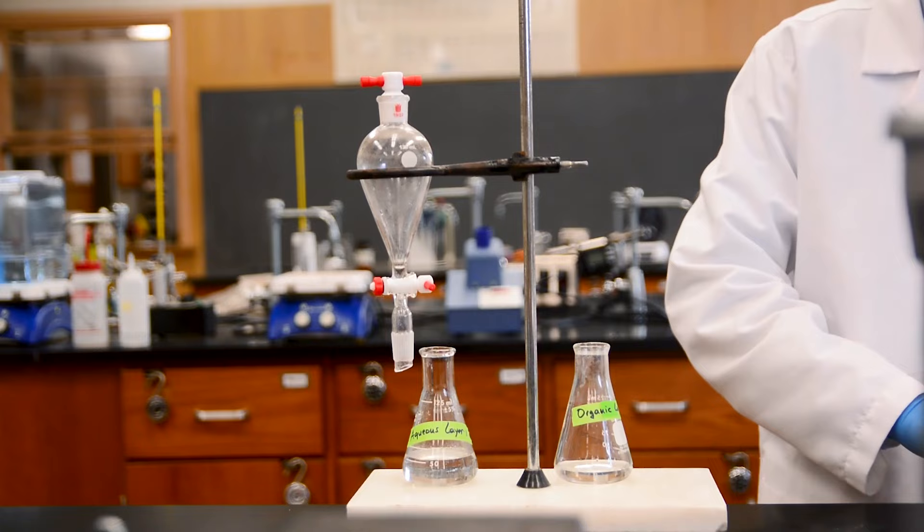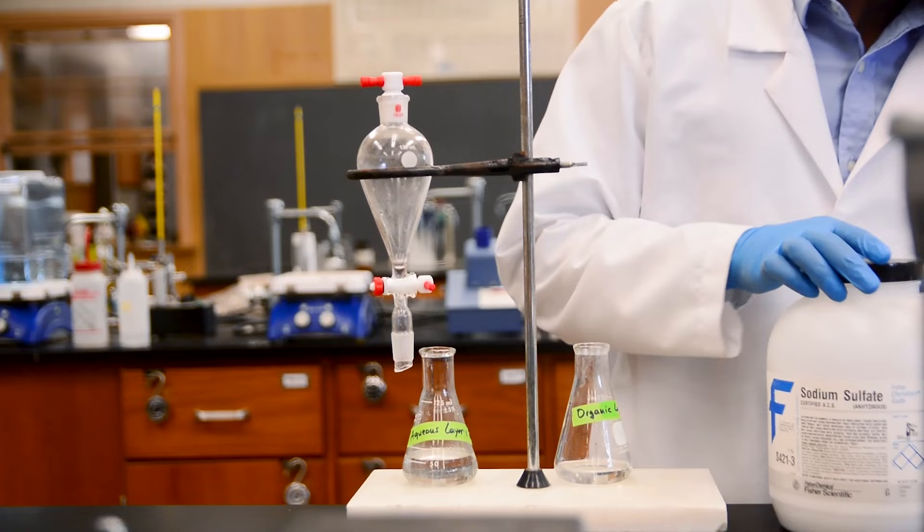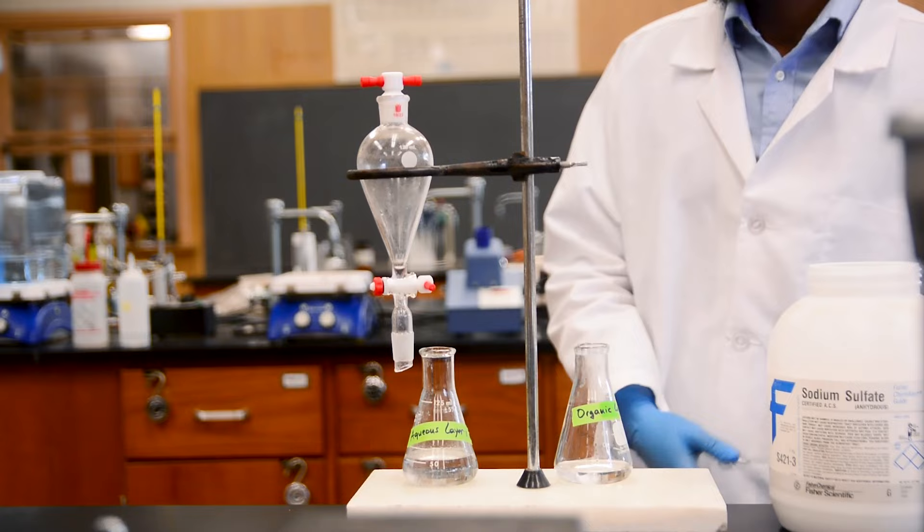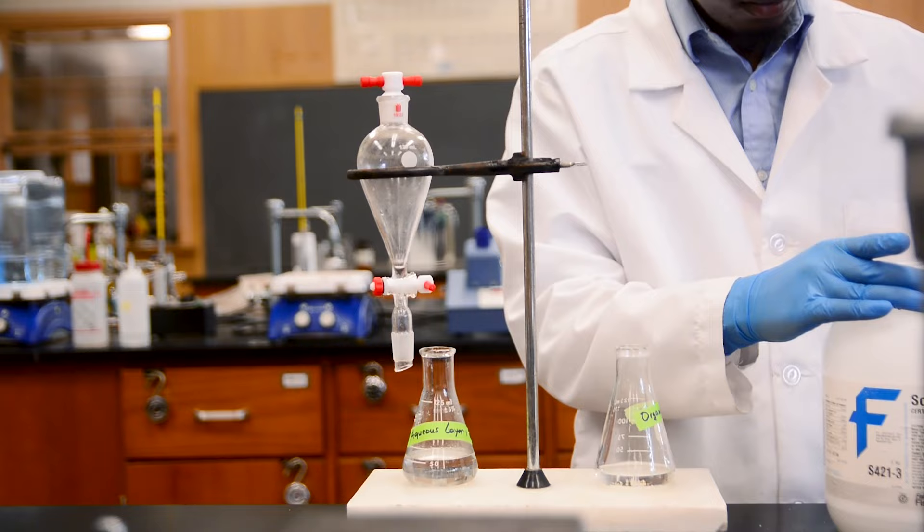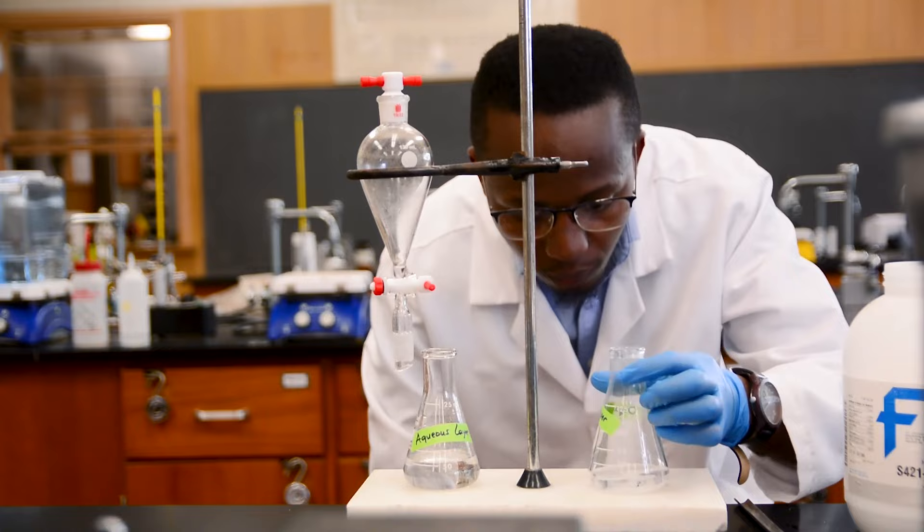The organic layer will likely contain residual water from the multiple washes that we performed. How do we get it out? We use a drying agent. A drying agent is a compound like sodium sulfate, that removes water when added to a solution. The water should bind to the drying agent, and thus join the solid phase. Keep adding the drying agent until you see a clear solution with all of the solid clumped at the bottom. You will know it's dry when lightly shaking the flask does not cause any solid to move around the solution.